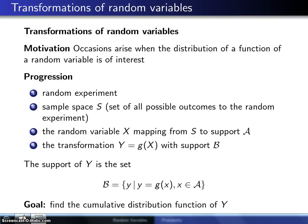There are five subtopics within this cumulative distribution function section, and the third subtopic is transformation of random variables. The motivation here is that sometimes the distribution of a function of a random variable is of interest.